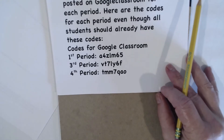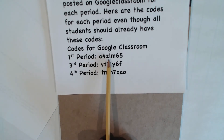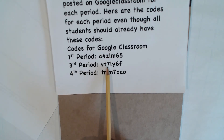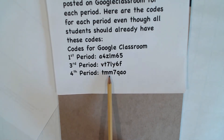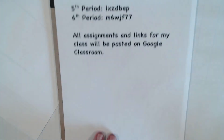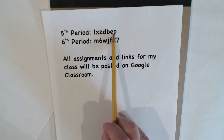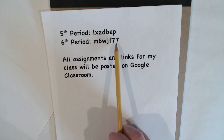In case some other students don't have my Google Classroom codes, you can send them to them. First period, the code is A4ZLM65. Third period, VT7LY6F. Fourth period, TMM7QAO. Fifth period, LXZDBEP, and sixth period, M6WJF77.